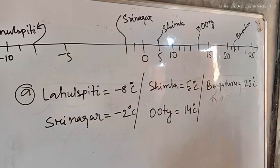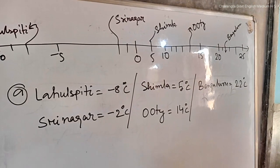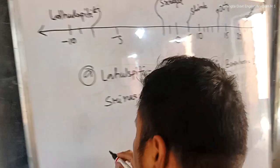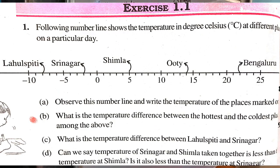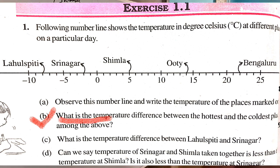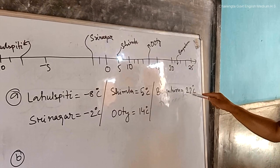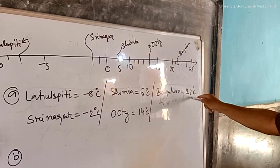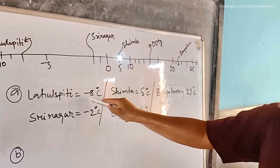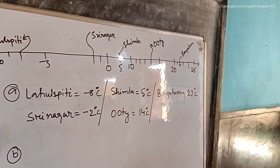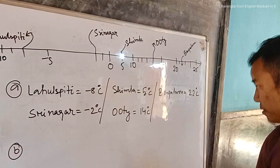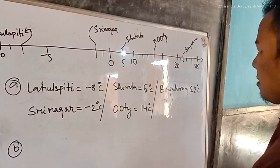This is the answer of question number A. Let us move on to question number B: What is the temperature difference between the hottest and the coldest place among the above? Before attempting the question, we have to see which place is the hottest and which place is the coldest.